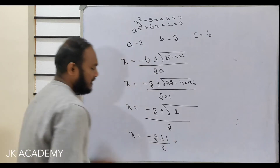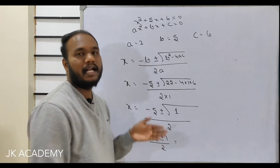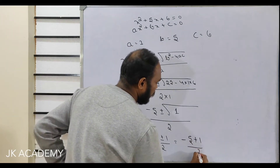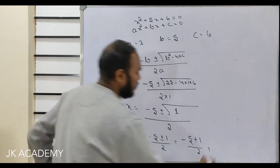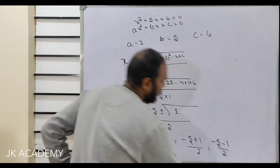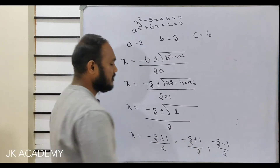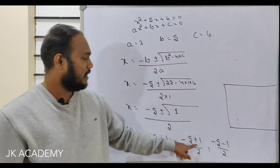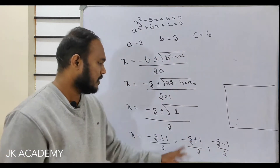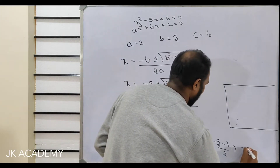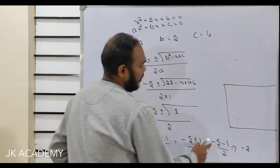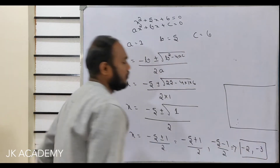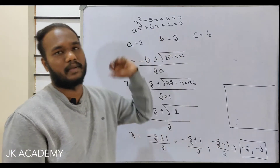So x equals minus 5 plus or minus 1 over 2. Plus or minus means we consider both cases. For the plus case: minus 5 plus 1 over 2 = minus 4 over 2 = minus 2. For the minus case: minus 5 minus 1 over 2 = minus 6 over 2 = minus 3. So minus 2 and minus 3 are the roots of this equation.